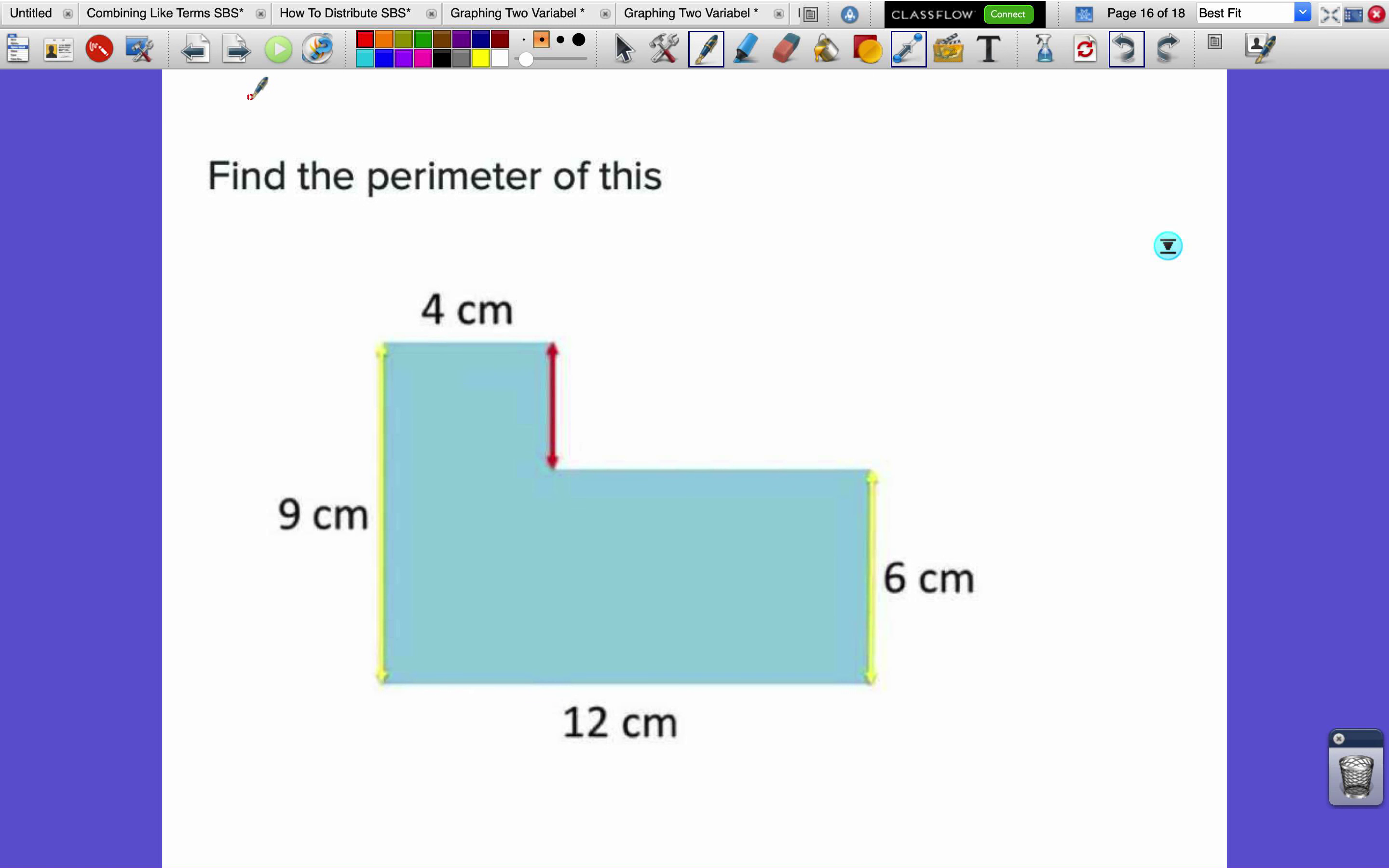Perimeter of this - sketch it, maybe try it on your own. Now let's figure it out. I'm going to cut it right here. This length here is 6. To make 9, we need this to be 3, which means we need this to be 3.